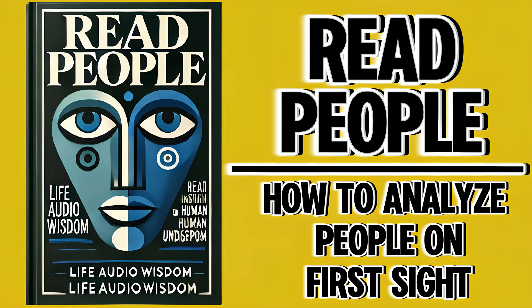By paying attention to silent signals you become better equipped to navigate social landscapes and build stronger relationships. Chapter three: Deciphering verbal communication — tuning into tone and tempo. The way people speak — their tone, tempo, and volume — can often tell you more than the words they use. A calm, steady voice suggests confidence, while a higher pitch may betray anxiety or excitement.